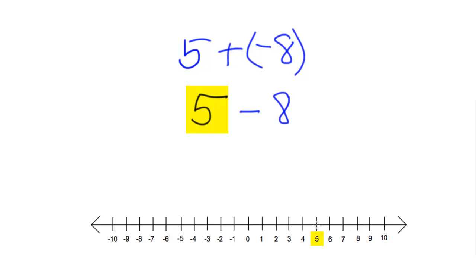Here we are starting at the number 5. Again, we always start at our first number, right? And again, we are subtracting, or going to the left, 8. So we're going to subtract 8. So we count to the left 8: 1, 2, 3, 4, 5, 6, 7, 8. Well, this time, by going to the left 8, that took us all the way to the negative side of the number line. And so, 5 minus 8 is negative 3.